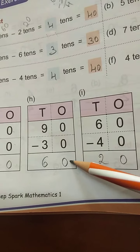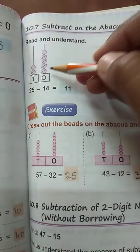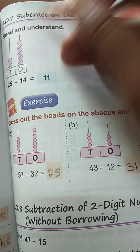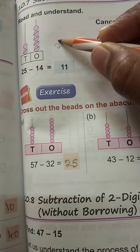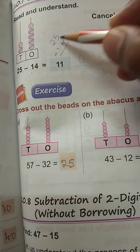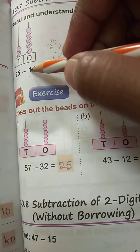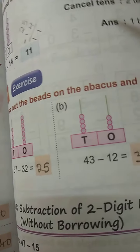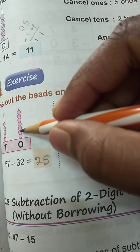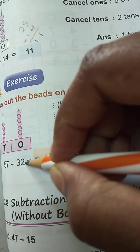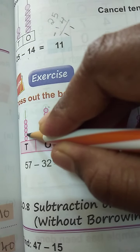0 minus 0 is 0. 7 minus 3 is 4. So 25 minus 14. 1 means 20. 1 means 20. 7 is there. How many? 1, 2, 3, 4, 5, 6, 7. So it is 2. So 1, 2. How many left? 1, 2, 3, 4, 5. 5 is there. Correct? So it is 5.